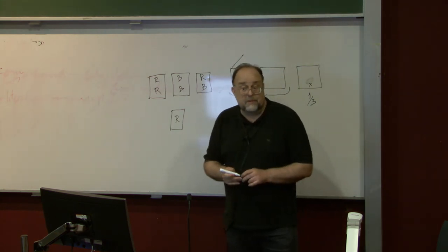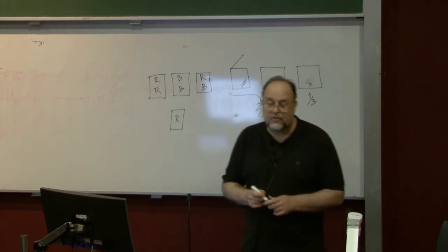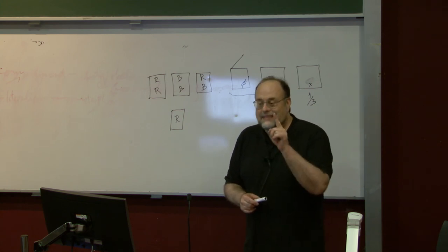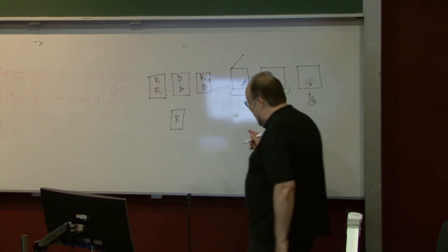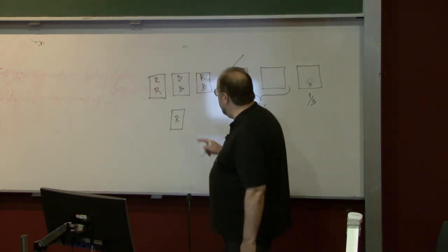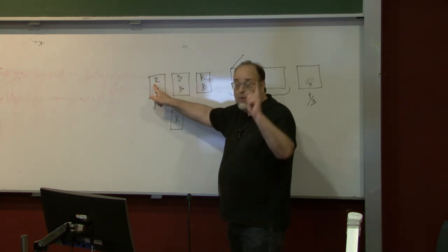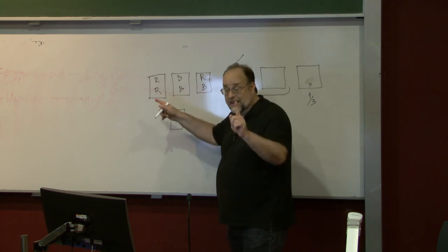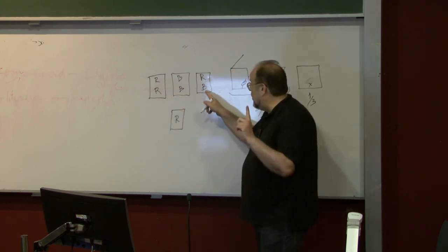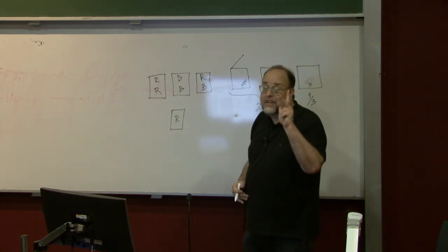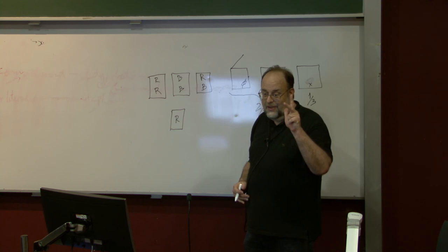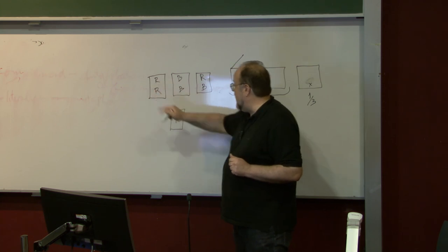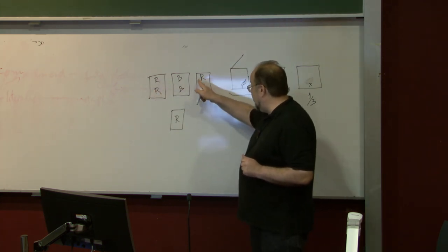So you have three cards with sides: red-red, blue-blue, and red-blue. You pick a random card and a random side, and it turns out to be red. Because the side is red, it cannot be the blue-blue card, so it's either the red-red card or the red-blue card. So the probability should be 50-50. Is that true?